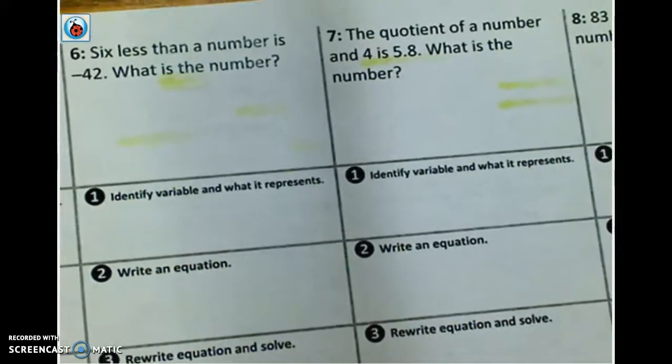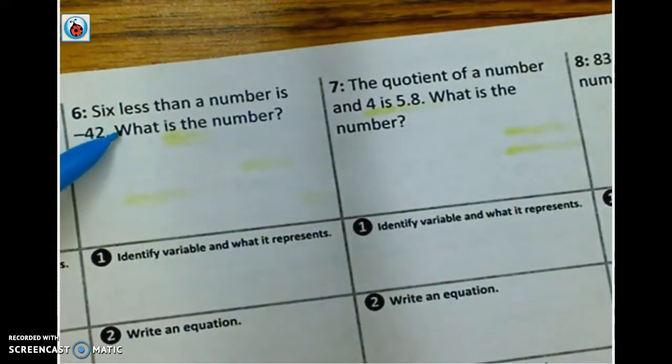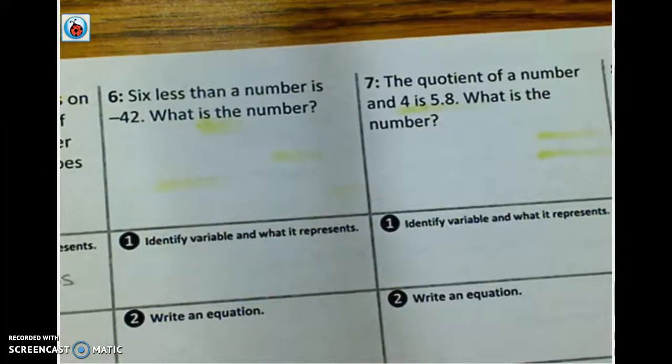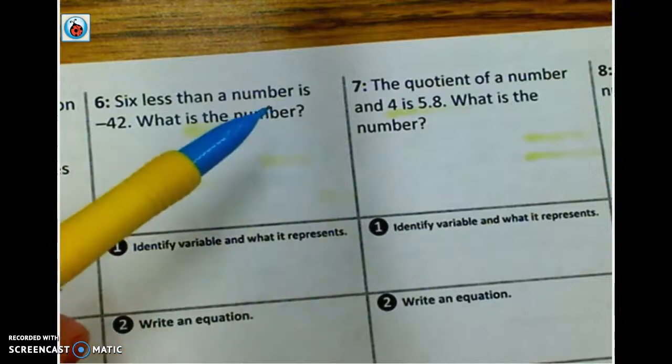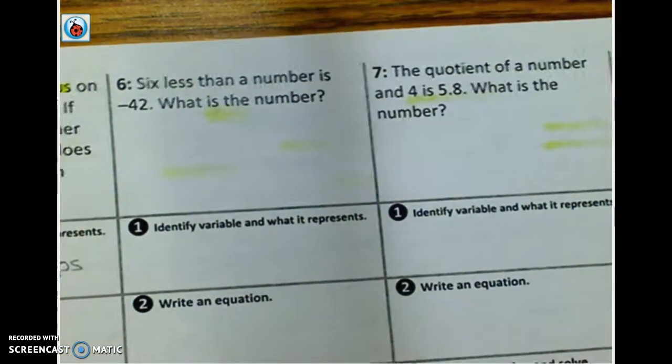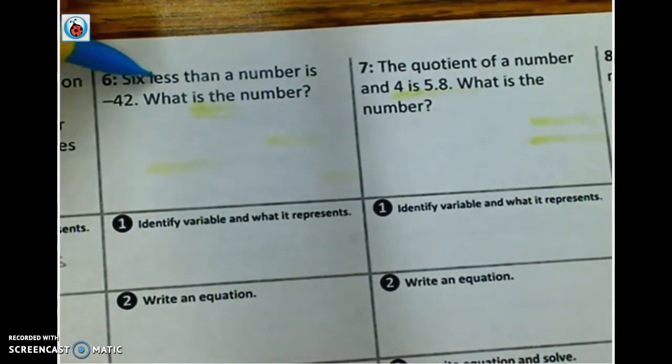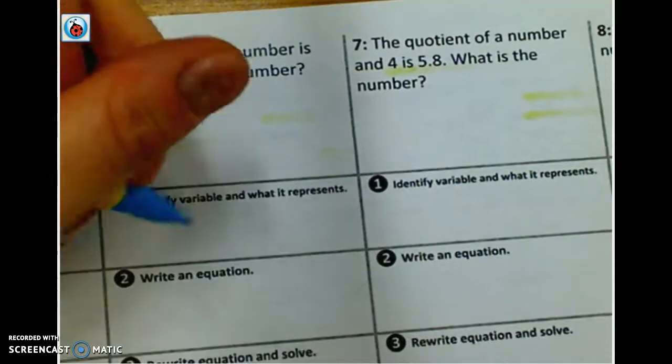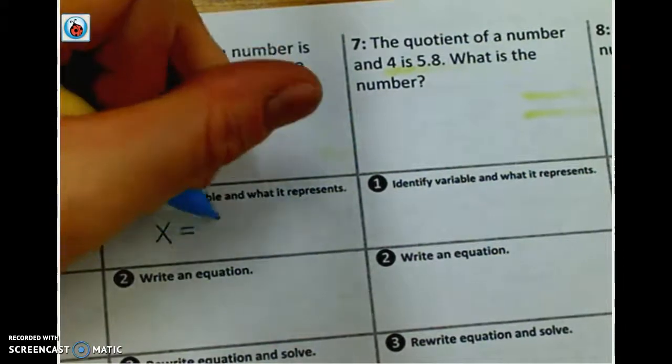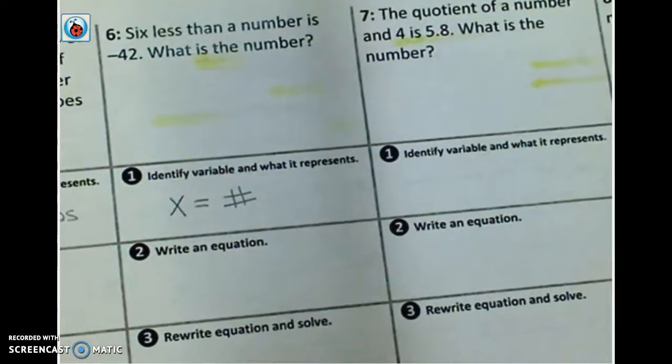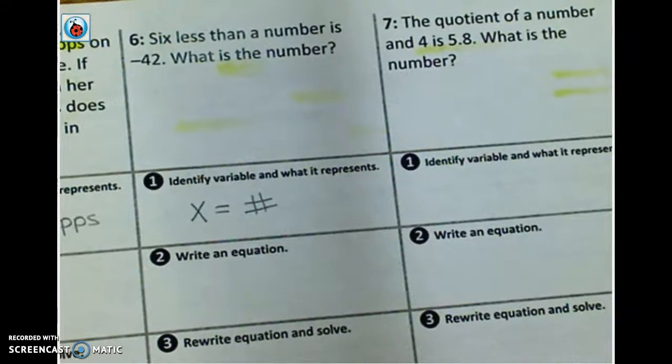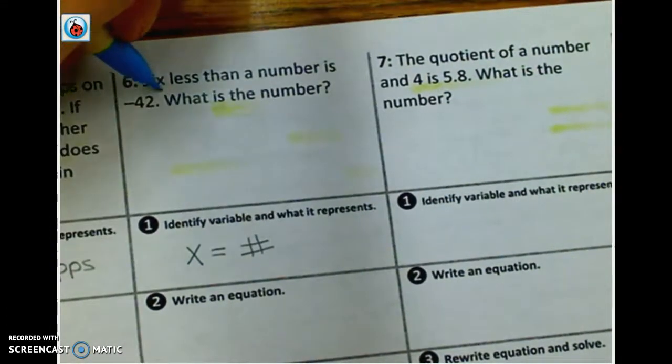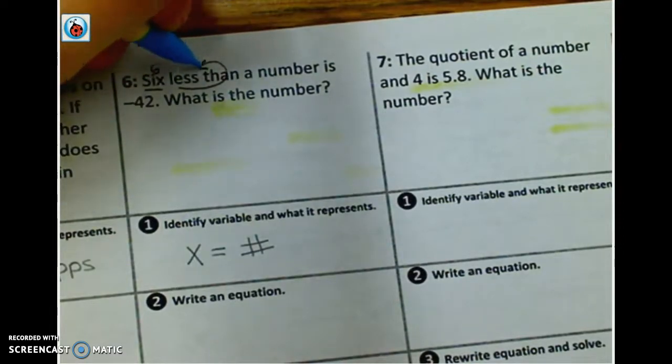Alright. The last three are about using what you know for translating to help you build your equation. Okay? So this will be the last one that I do for you. And I'd like you to try 7 and 8 on your own. Alright? So we have 6 less than a number is negative 42. What is the number? Well, make that your variable. I'm trying to figure out what the number is. So X is my number. You can use whatever variable you want. Okay? Write an equation. Well, let's translate it. 6 less than, remember, is a turnaround phrase. A number is, means equals, negative 42.